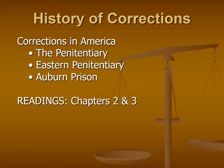So we're going to talk about what is the penitentiary model, when did it start in America, who were some of the big players that contributed to it, and then we're going to take a closer look at two of our earliest and most prominent versions of that penitentiary model — Eastern Penitentiary in Pennsylvania, and Auburn Prison in New York. The readings that correspond with this are chapters two and three from your course textbook. So let's go ahead and get started.